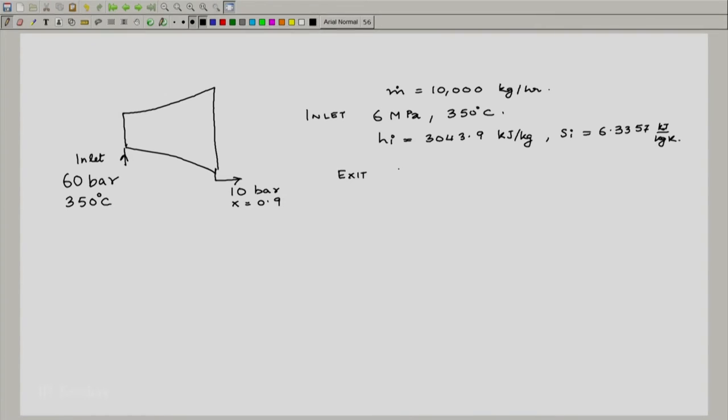What about exit? We know that it is 10 bar, which means 1 mega Pascal and it is 0.9 dry. So, we can find h easily. This would be 0.9 multiplied by h fg at 1 mega Pascal plus hf at 1 mega Pascal and we would get this as 2575.66 kilojoule per kg. We would do a similar exercise: 0.9 multiplied by s fg plus s f and we get this as 6.1404 kilojoule per kg Kelvin.